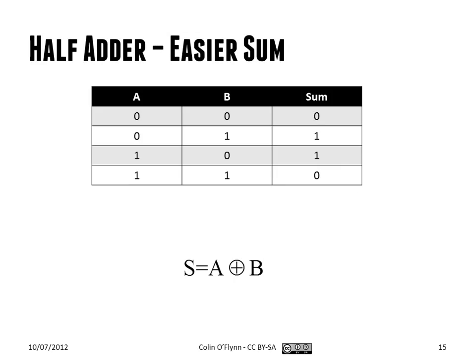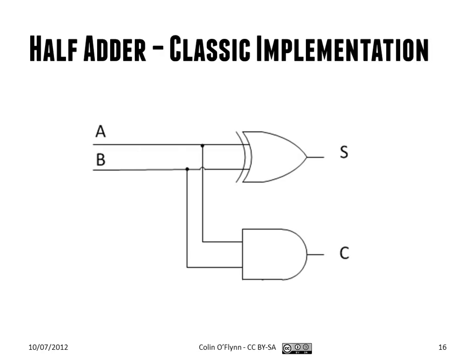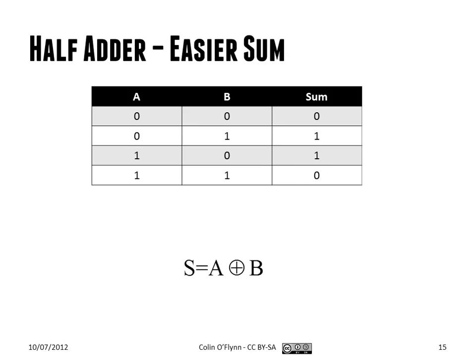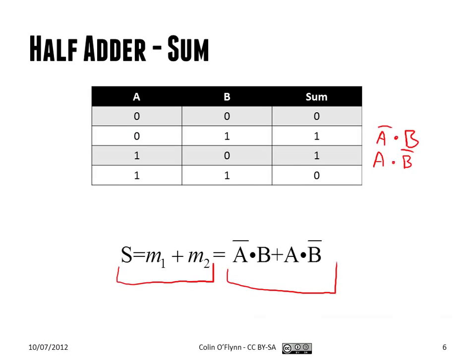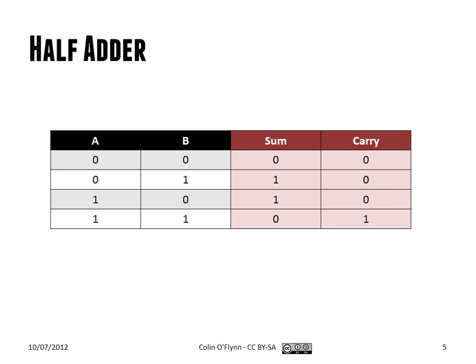What you might have noticed looking through the truth table of the SUM output is that it's the same thing as an XOR gate. So the SUM output can also be built using complex gates — specifically just a single XOR gate. In that case, we can represent the half adder as a block taking inputs A and B, with SUM output and carry output.